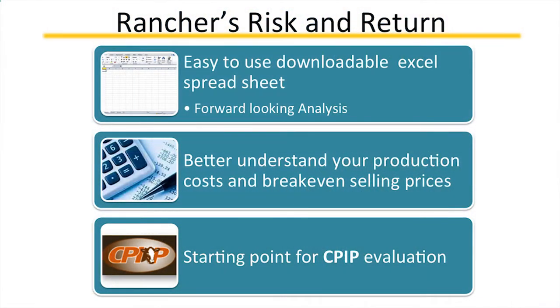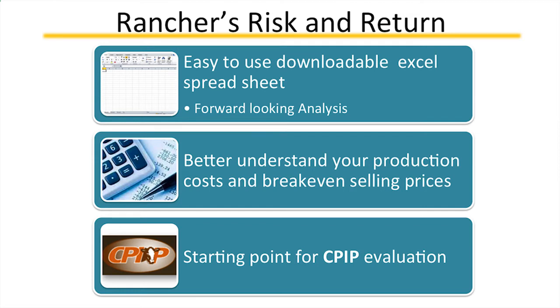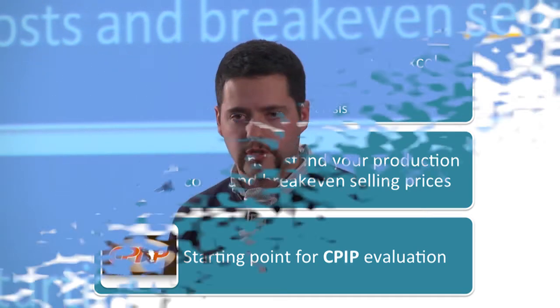The bulk of our presentation will be on a new tool: Rancher's Risk and Return. We heard updates this morning from Ann about what the industry is doing, and really making sure we're taking a good look at our business, how we adapt, and what we put in place to manage that risk going forward is pretty key. This is a great tool to help us do that. It's an easy-to-use, downloadable Excel spreadsheet. It gives you better understanding of your production costs, your break-even, and your selling prices, and it will help you analyze whether you want to take cattle price insurance or use options going forward.